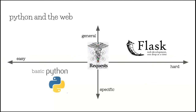And then we moved on to doing something a bit more general and a little bit harder, which is doing requests — getting information from online. And then we ended up with not only getting information from online, but being able to create your own server and give back information when you're online.